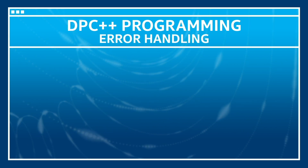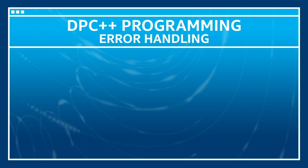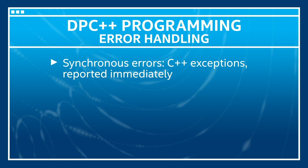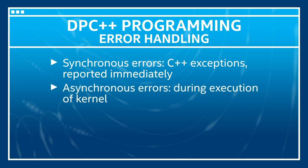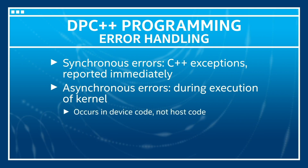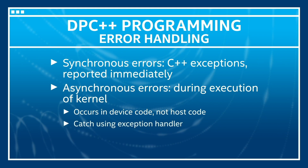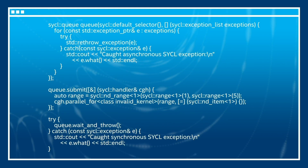Next is error handling. There are two types of errors in DPC++. First, there are synchronous errors which are C++ exceptions and are reported immediately. Second, there are asynchronous errors. They occur during the execution of the kernel which is in the device code and not the host code. Asynchronous errors can be caught using an exception handler. Here is an example of error handling.